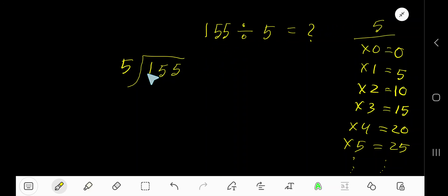155 divided by 5. Here, 5 is the divisor, so we need the multiplication table of 5. 5 times 0 is 0, 5 times 1 is 5, 5 times 2 is 10. To find the multiplication table of 5, just add 5 with the previous step: 0 plus 5 is 5, 5 plus 5 is 10, 10 plus 5 is 15, 15 plus 5 is 20.